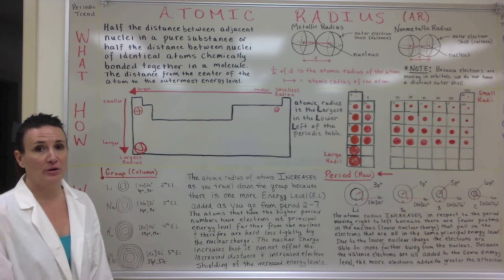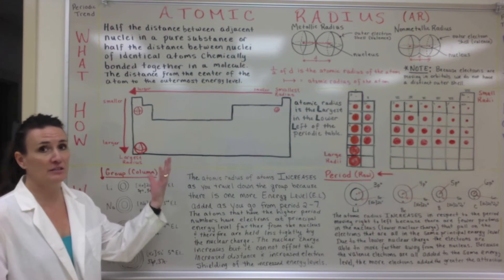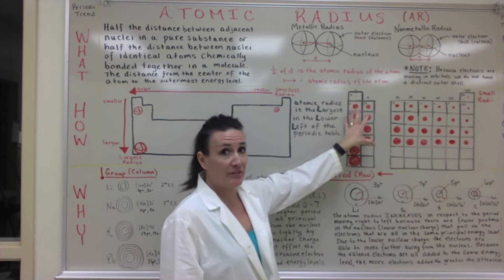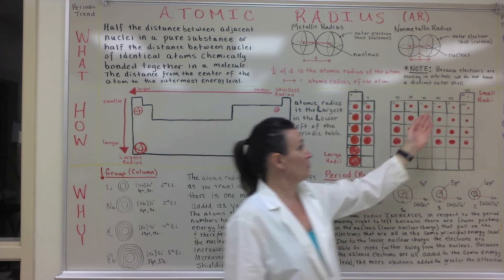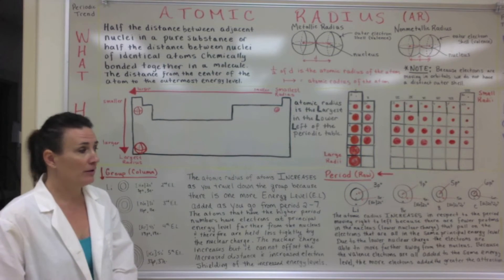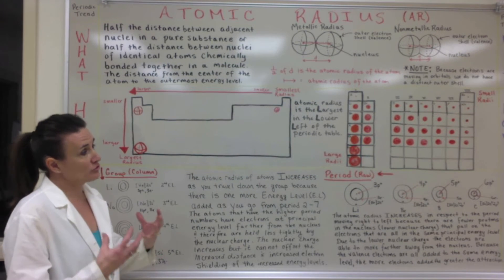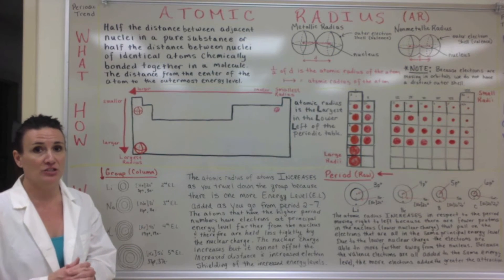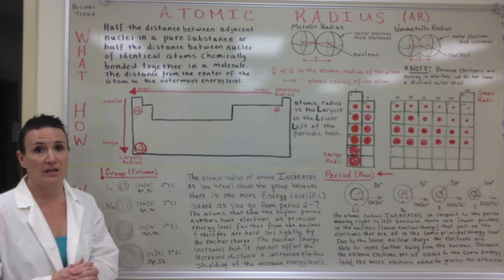The first periodic trend we'll have to understand is atomic radius. There are large atoms in the lower left side of the periodic table and small atoms in the upper right corner. Why does that matter? It affects how strongly those electrons are held in the electron cloud, and that will affect its ionization energy and electron affinity.